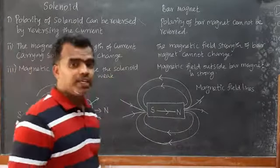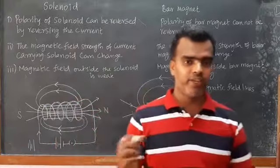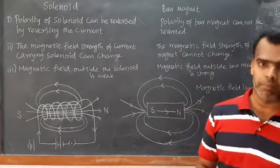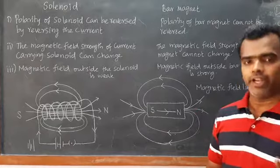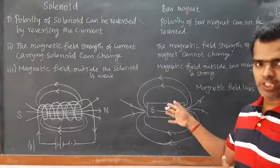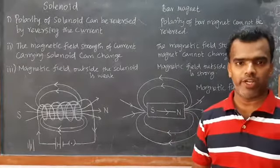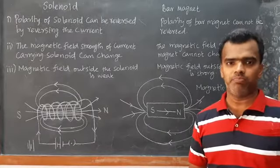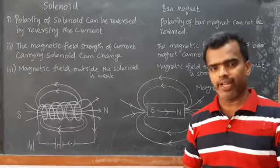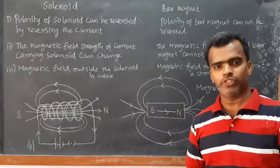I hope you understand the difference between the magnetic field lines of a current carrying solenoid and a bar magnet — the similarities and the differences. I hope you really enjoyed and understood well. Thank you, see you in the next video.